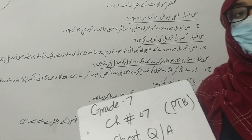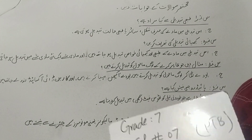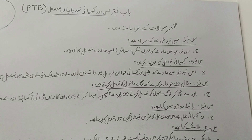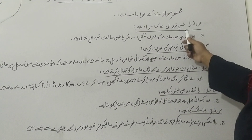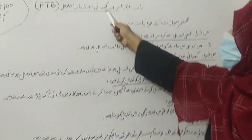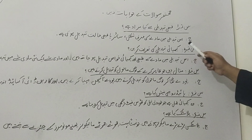We are going to do short answer questions. First, Number 1, Chapter No. 7: Tabbi aur Kimiai Tabdiliyan aur Awamil. Number one: What is Tabbi aur Kimiai Tabdiliyan?